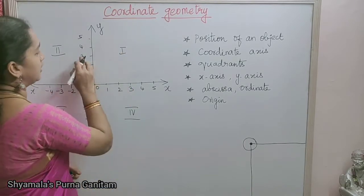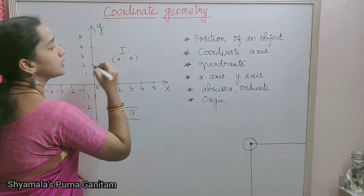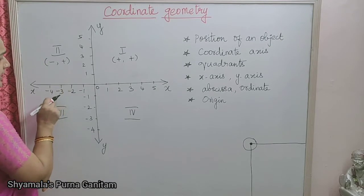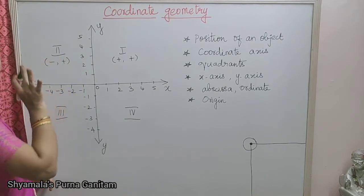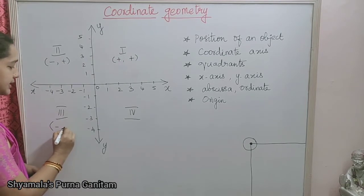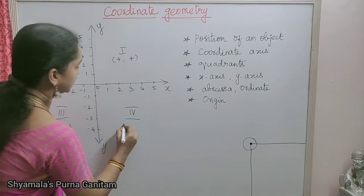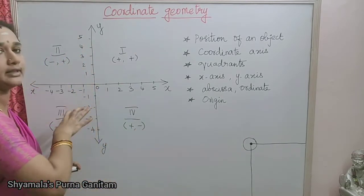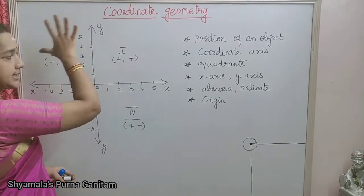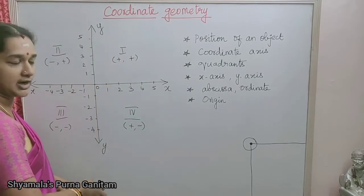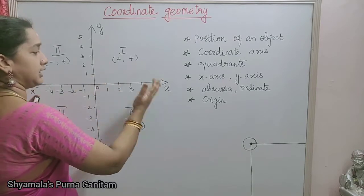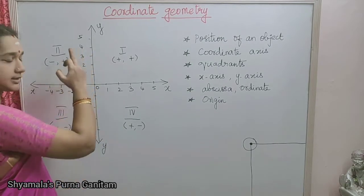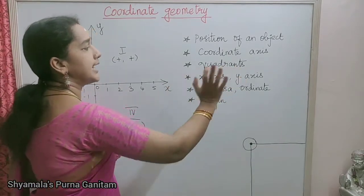In the first quadrant, both x and y points will be positive. In the second quadrant, x-axis will be negative and y-axis will be positive. In the third quadrant, both x-axis and y-axis points will be negative. In the fourth quadrant, x-axis will be positive and y-axis point will be negative. This is how you will be plotting the points in the four quadrants. The center point is called the origin.